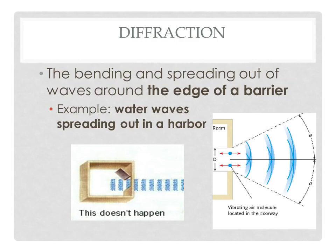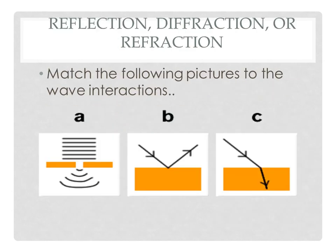Another example that we'll see demonstrated in class tomorrow for a real life example would be water waves spreading out throughout a harbor because of the motion of the boats in the water. So what we want to do here in this example on the right side of your paper is match the pictures to the wave interactions that were discussed here. So letters A, B, and C should match up to reflection, refraction, or diffraction.